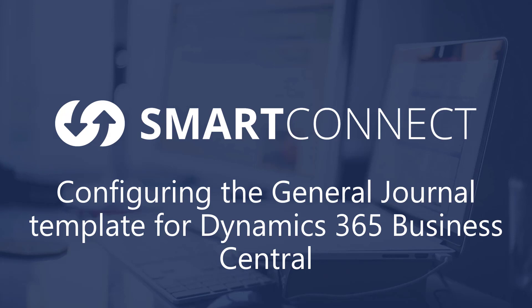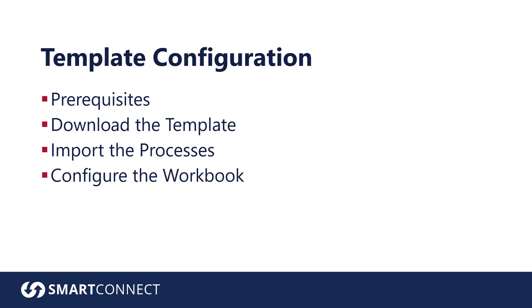When it comes to setting up template configuration, we have to talk about four main categories. The first one is some prerequisites. We have to download the template if you haven't done so already. We have to go through the import of processes into SmartConnect.com. And finally, we have to configure the workbook.